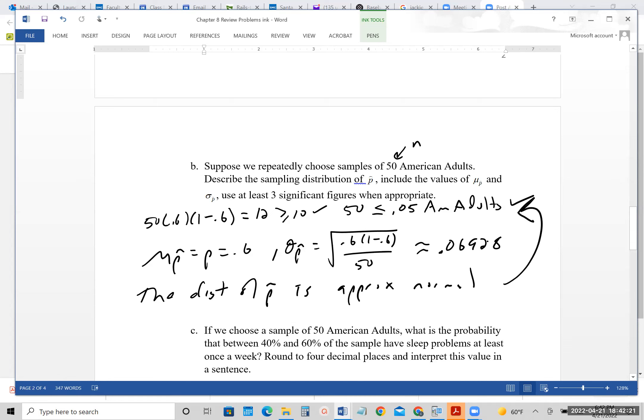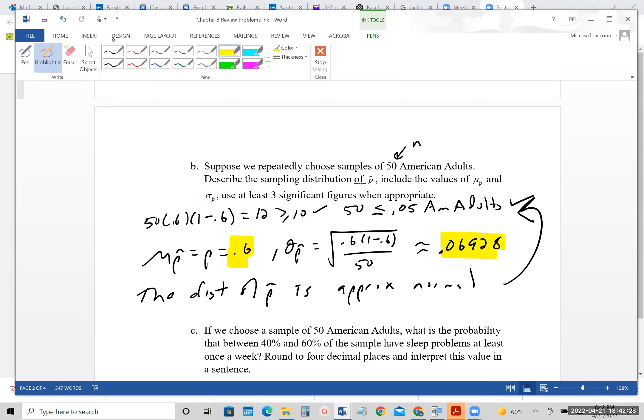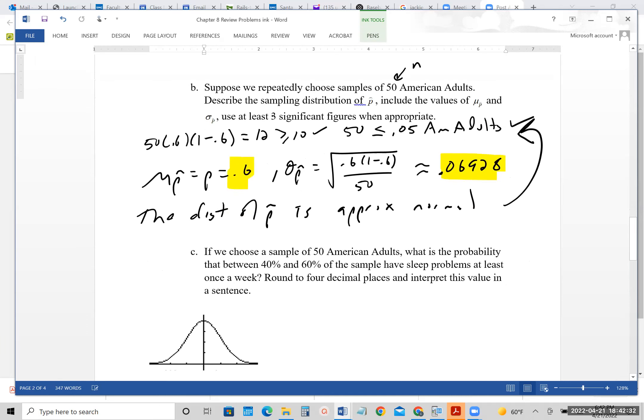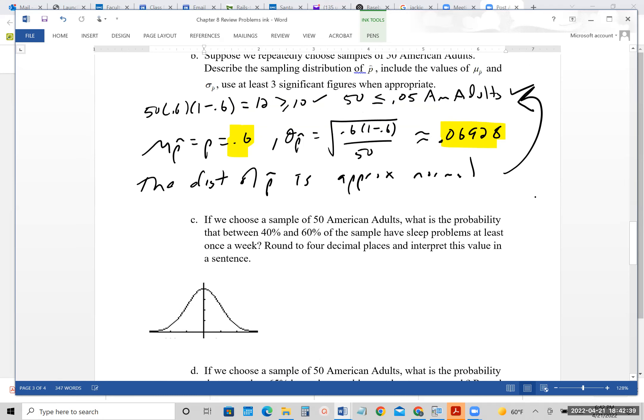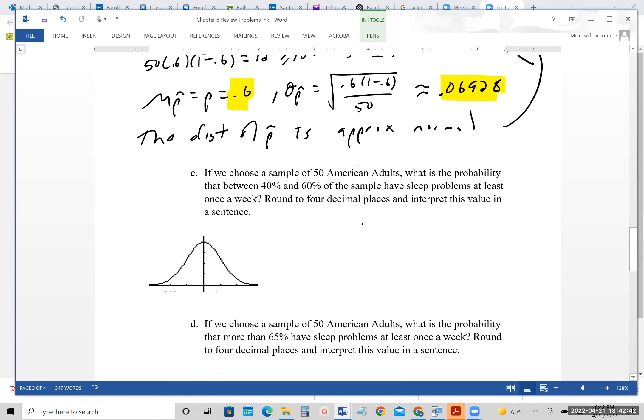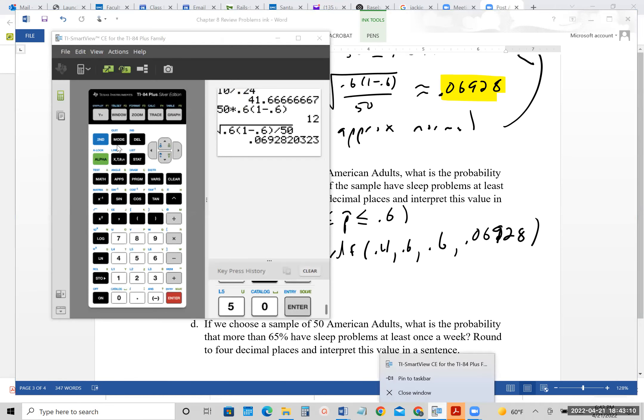Actually, I should probably say, just to be clear, the distribution of P hat is approximately normal. And we know that because of the conditions we satisfied right here. And then we can actually use, just to make life easier, we can use these two values we just calculated when we go to normal CDF. So I'll highlight them so you can see them. So if we choose sample 50, what is the probability between 40 and 60% of the sample have sleep problems at least once a week? So we already know the mean is 0.6. So that means that would be right here and 0.4 would be over here. So we want the area between those two.